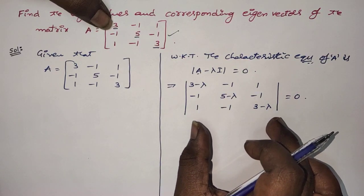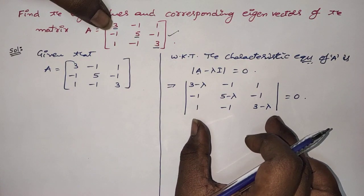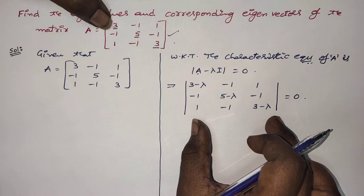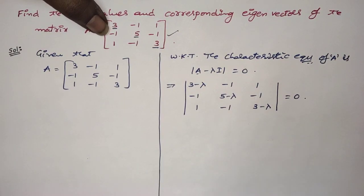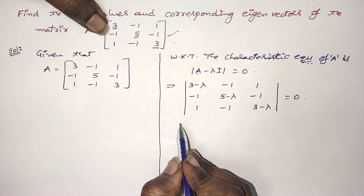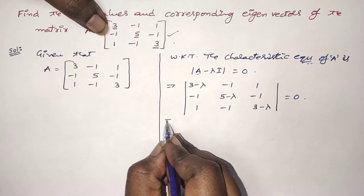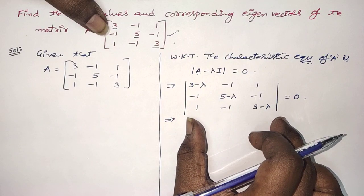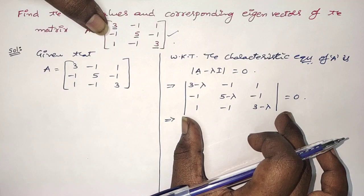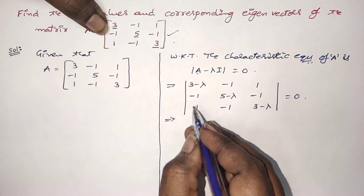If you simplify the value of this determinant, you will get an equation in terms of lambda. The roots of that equation are known as eigenvalues. There is a shortcut — don't use the ordinary method to find this determinant; it takes a lot of time.